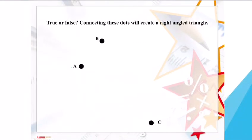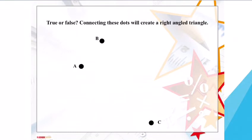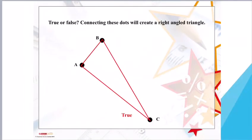Your final question today is asking you to connect these dots and find out if it's true or false that you'll create a right angle triangle by doing so. Once you've connected those dots, you do create a right angle triangle, as point A has a 90-degree angle in its corner.